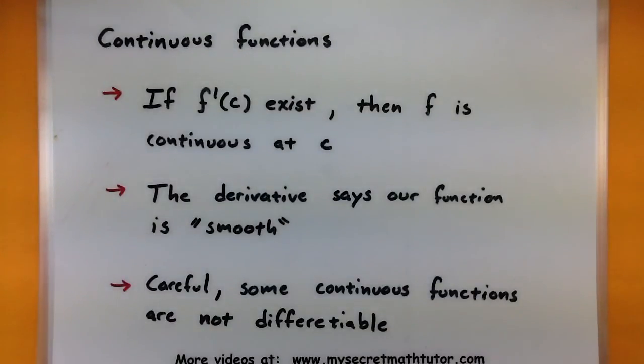Now one cool thing about having the derivative as a function is it tells us a little bit about the continuity of the function and it tells us a lot about the smoothness of the function. Here's what it says about continuity. If the derivative of a function at a point c exists, then you actually know that f is continuous at that point c.